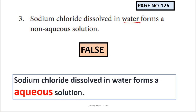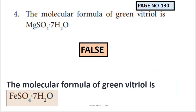The molecular formula of green vitriol: green vitriol is crystalline ferrous sulfate. The statement that it is magnesium sulfate is false. Green vitriol is FeSO4·7H2O - ferrous sulfate heptahydrate.